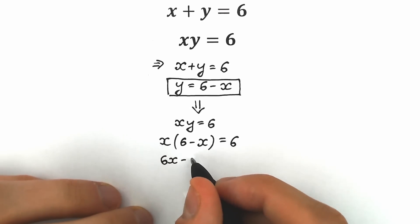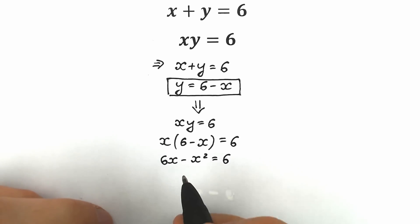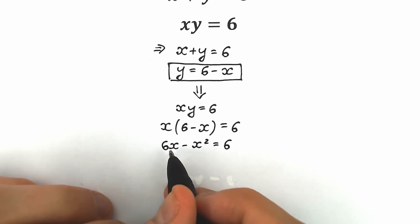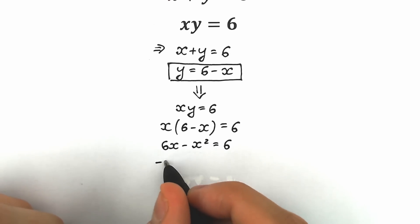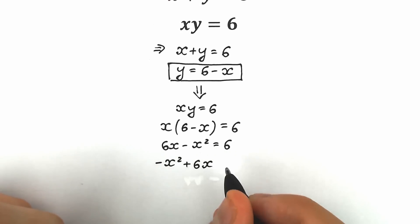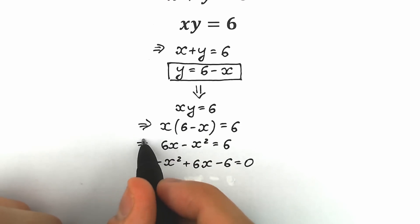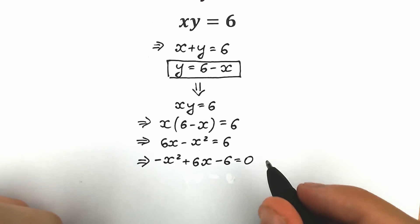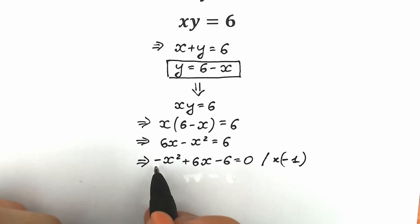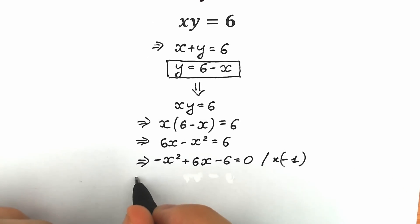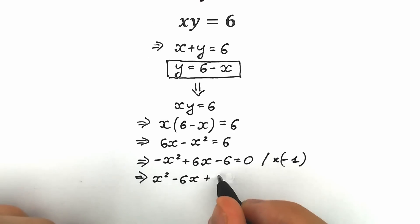We have 6x minus x squared equals 6. Let's bring the 6 from the right side to the left side to create our quadratic equation. Since we prefer x squared in the first position, we swap and multiply both sides by minus 1 to get x squared minus 6x plus 6 equals zero.